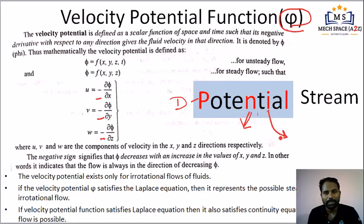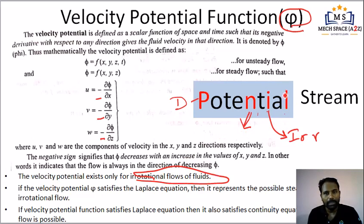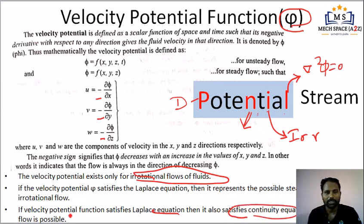If phi exists, it is irrotational flow of fluids. If this is L — if phi satisfies the Laplace equation, meaning del-squared phi equals zero — and if the continuity equation is satisfied, then flow is possible. That flow is most probably steady incompressible flow.